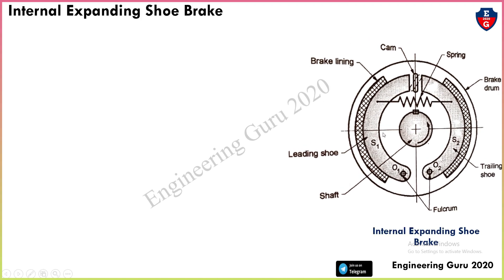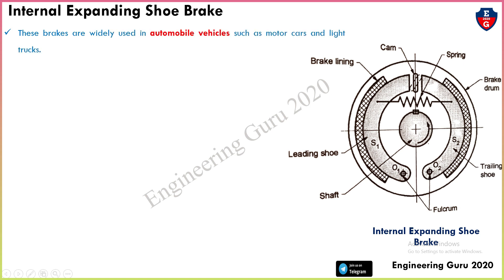This is the schematic diagram of the internal expanding shoe brake. Here we have the braking lining, the leading shoe, the shoe itself, the shaft, the fulcrum point O1, the trailing shoe, the brake drum, the spring, and the cam. Brakes are widely used in automobile vehicles such as motor cars and light trucks. This brake can be operated mechanically or hydraulically.